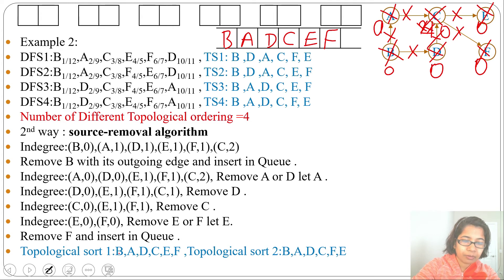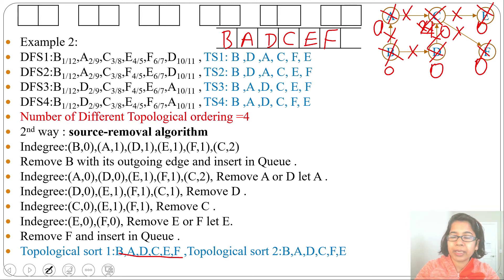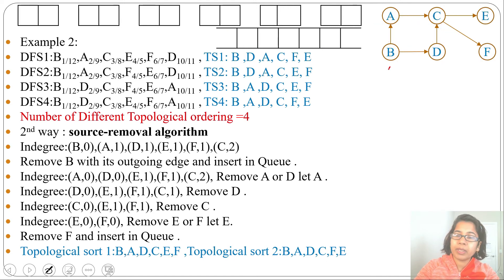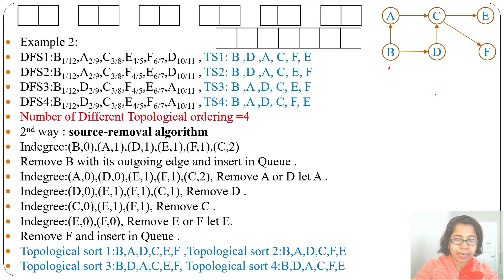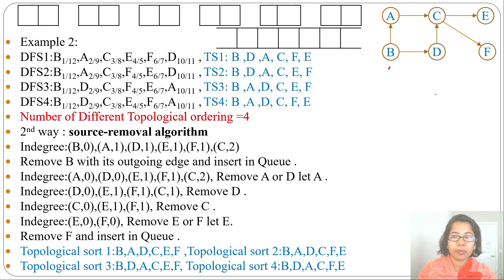We get the sequence B A D C E F — this is our first topological order. After C, if we visit F before E we get B A D C F E. Also, after B if we visit D first then there are two more orderings: B D A C E F and B D A C F E. So we got four topological orderings from the source removal algorithm.